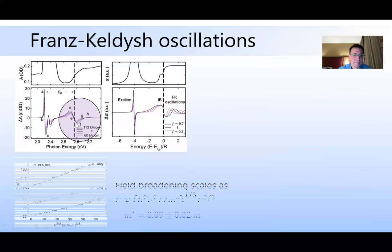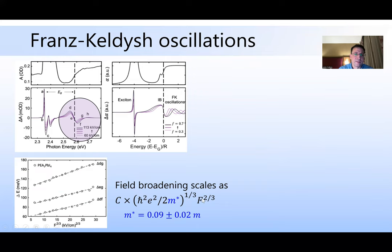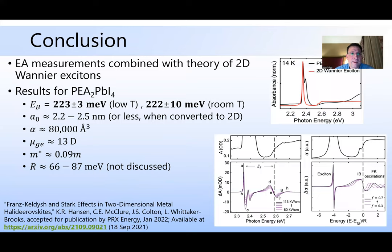Meanwhile, over here in these oscillations, I mentioned the broadening before. It turns out the broadening scales as field to the two thirds. I've just plotted separations between various features versus field. And that broadening depends on the reduced effective mass. So we can get a value for that of 0.09.